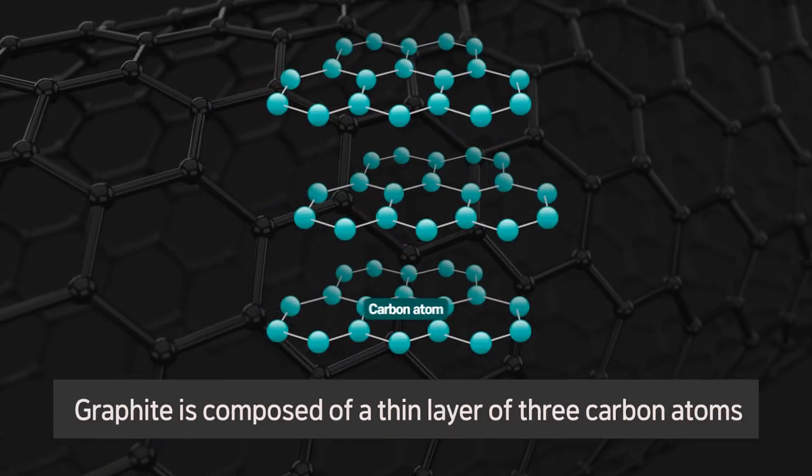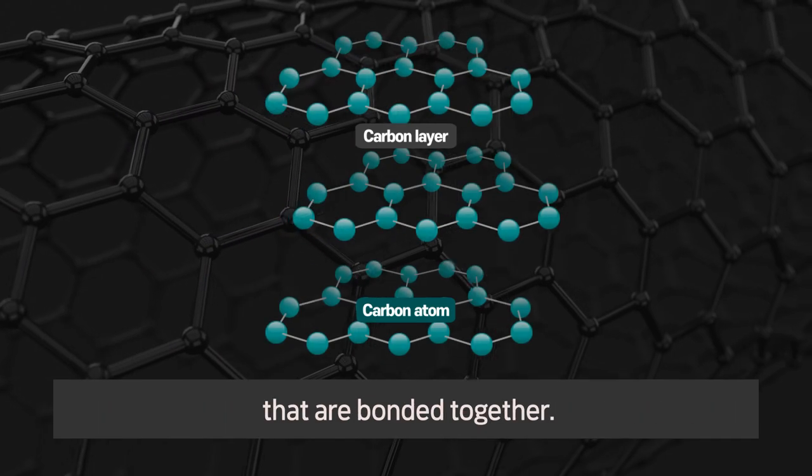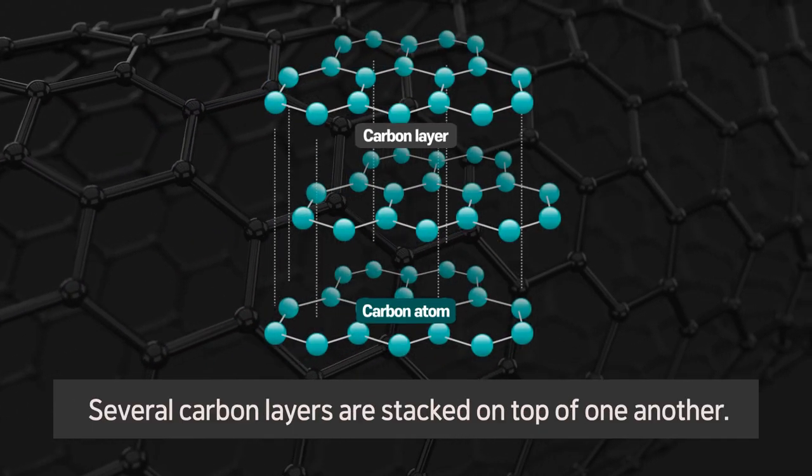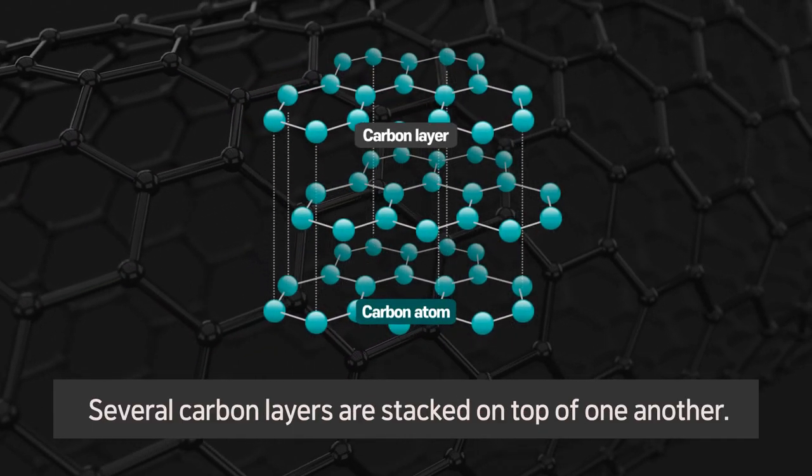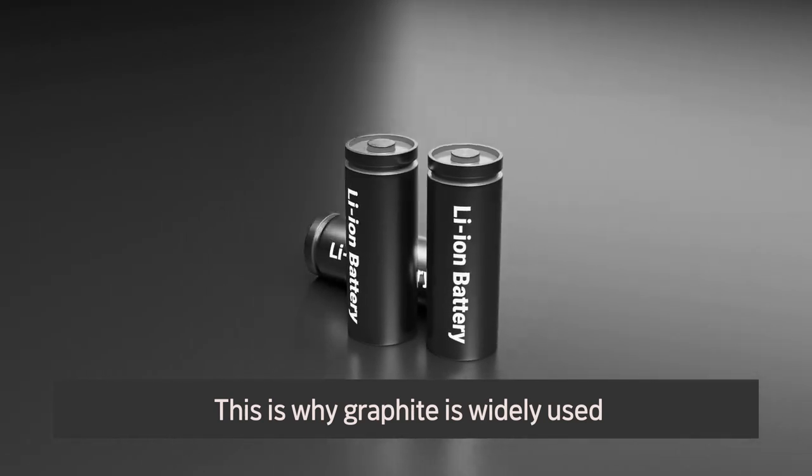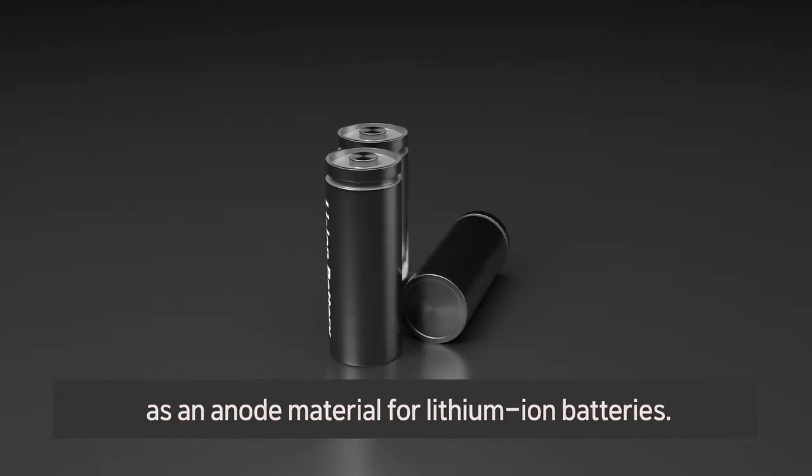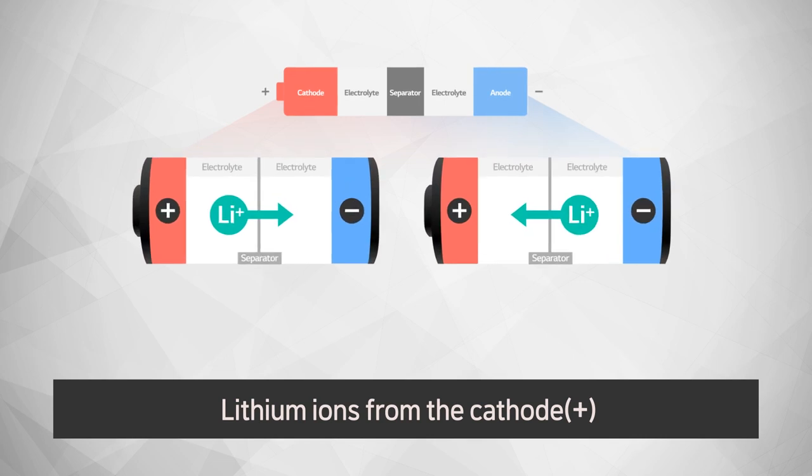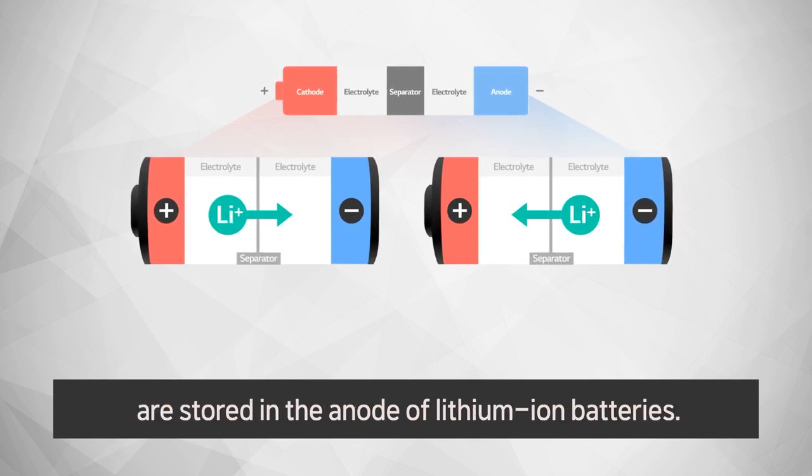Graphite is composed of a thin layer of three carbon atoms that are bonded together. Several carbon layers are stacked on top of one another. This is why graphite is widely used as an anode material for lithium-ion batteries. Lithium ions from the cathode are stored in the anode of lithium-ion batteries.